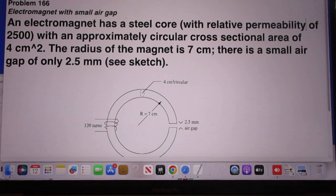An electromagnet has a steel core with relative permeability of 2500, with an approximately circular cross-sectional area of 4 square centimeters. The radius of the magnet is 7 centimeters. There is a small air gap of only 2.5 millimeters. See the sketch.